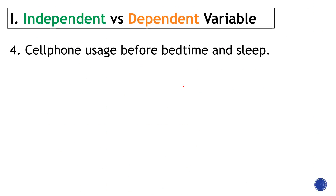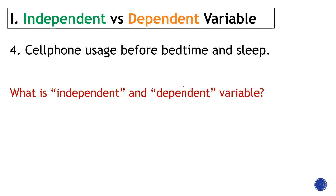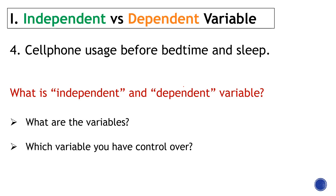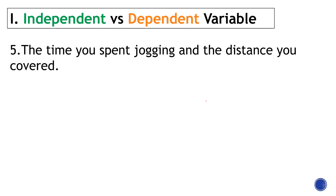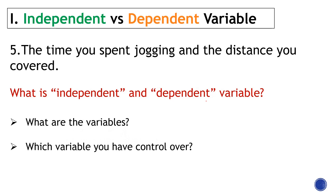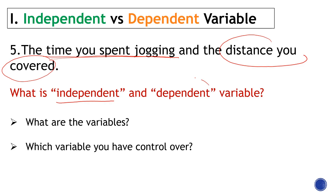Cell phone usage before bedtime and sleep: the cell phone usage is our independent variable, and the number of hours you sleep is the dependent variable. For the next example, the time you spent jogging is independent, and the distance you covered is the dependent variable.